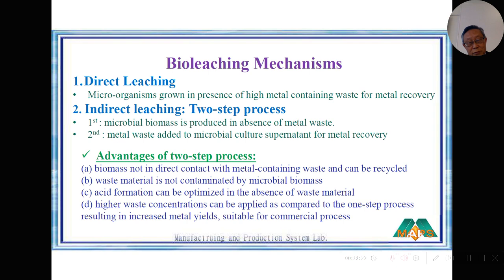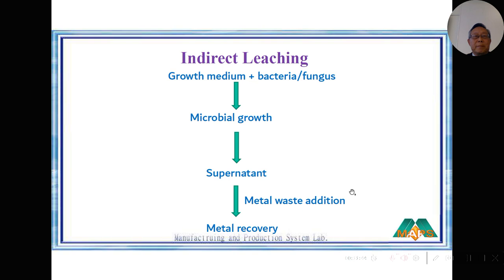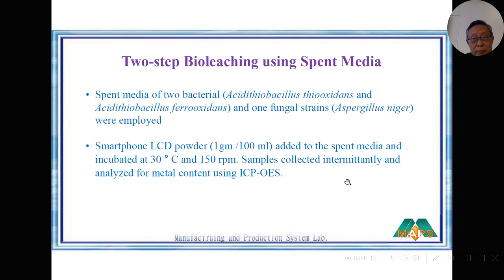We use the spent media — not the microbes — to recycle the waste. This is the indirect leaching two-step process. The advantage is that biomass and waste metals are not mixed with each other, which is better for separation, better efficiency, and a higher waste concentration can be applied compared to the one-step process. Spent media from two bacteria (TT and AF) and one fungus (Aspergillus niger) were used with the smartphone LCD powder.